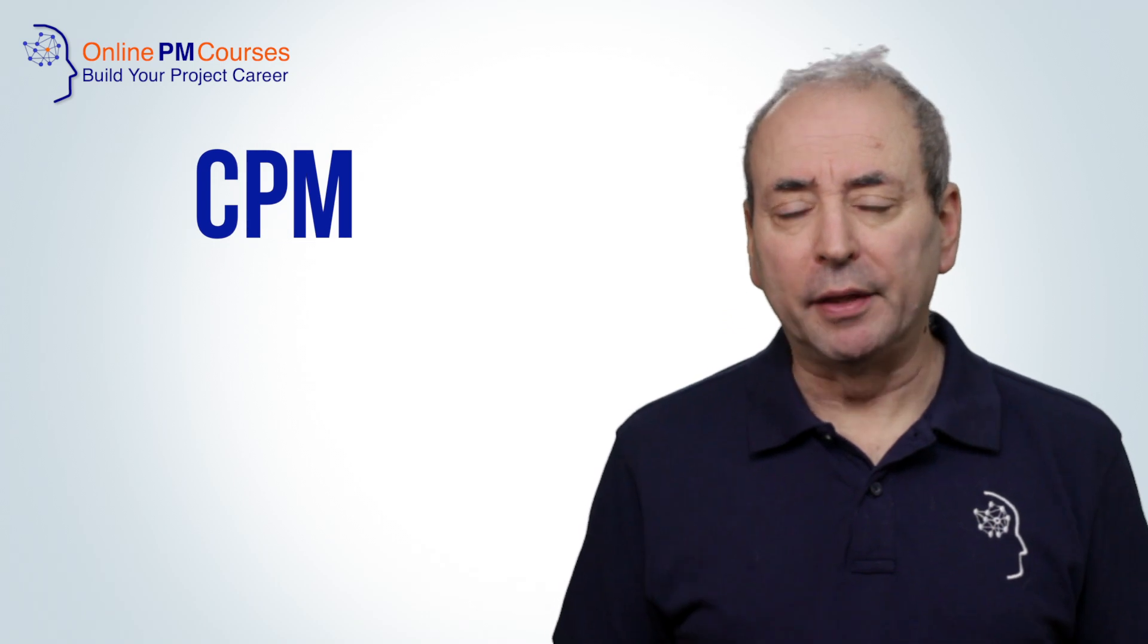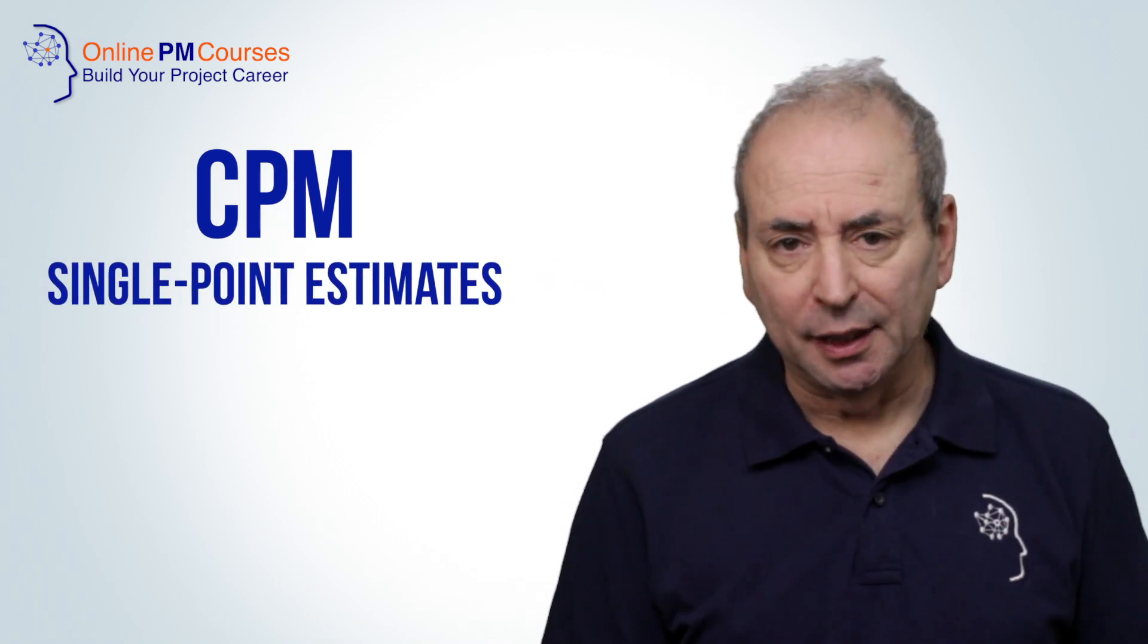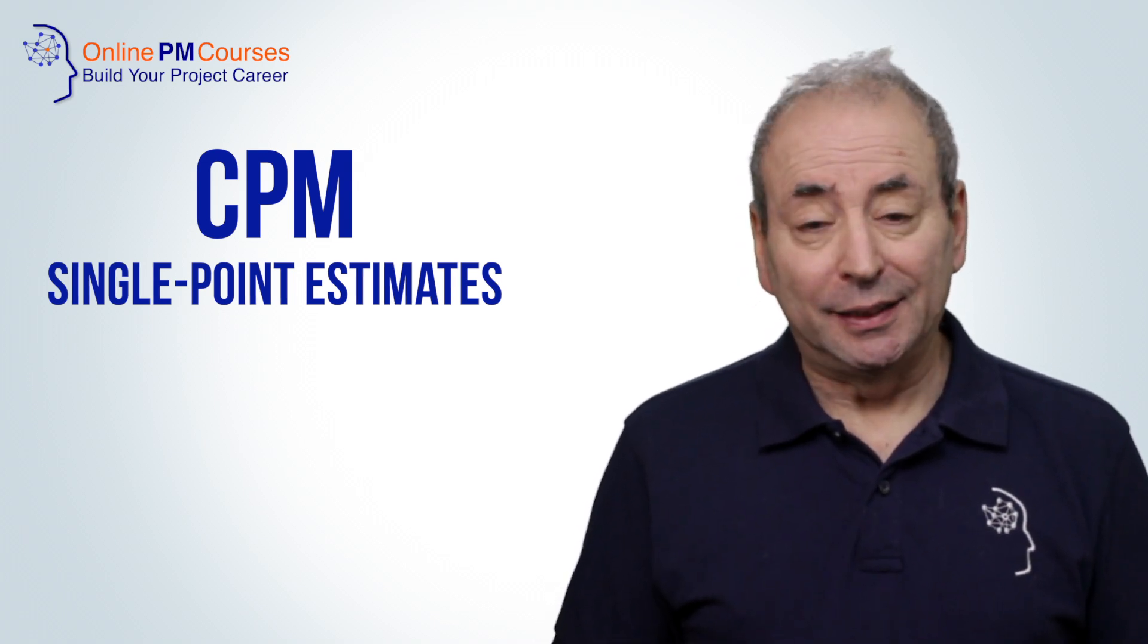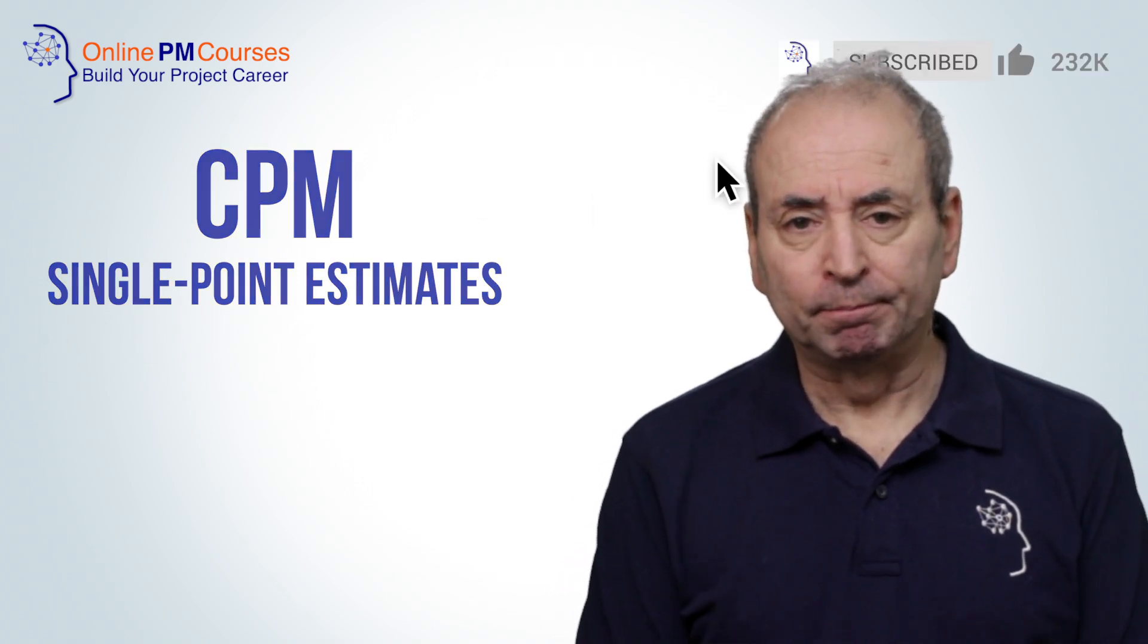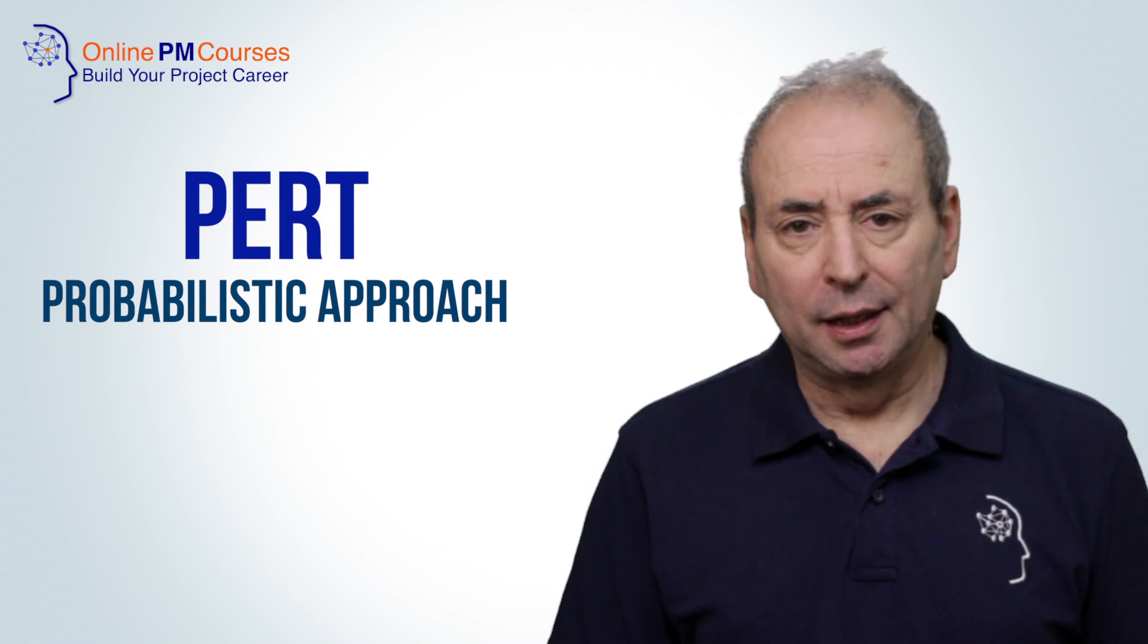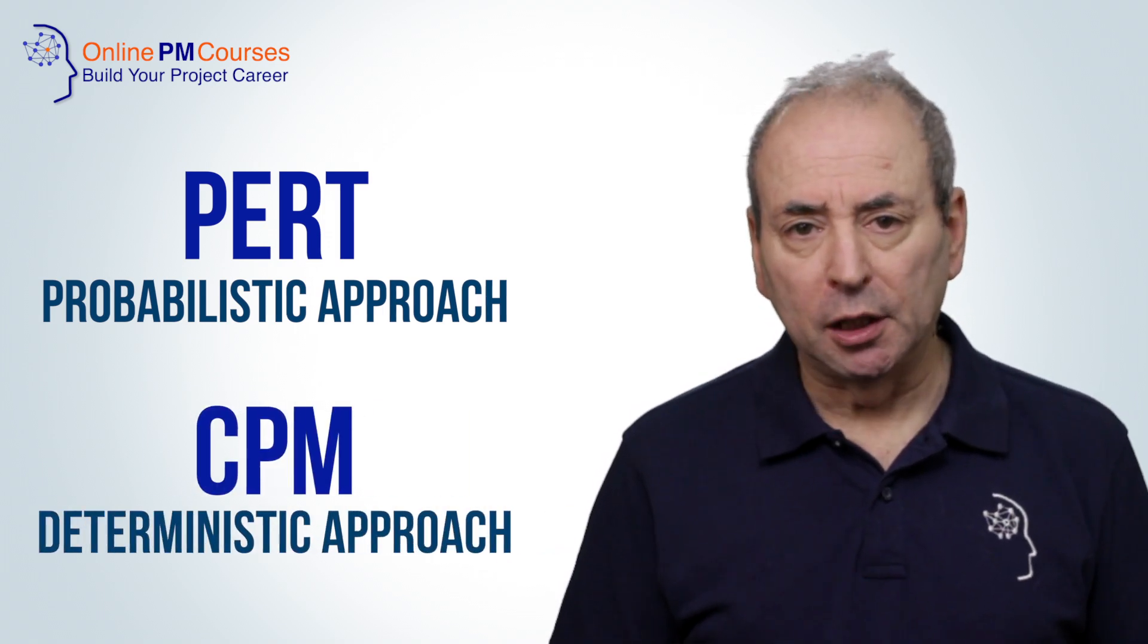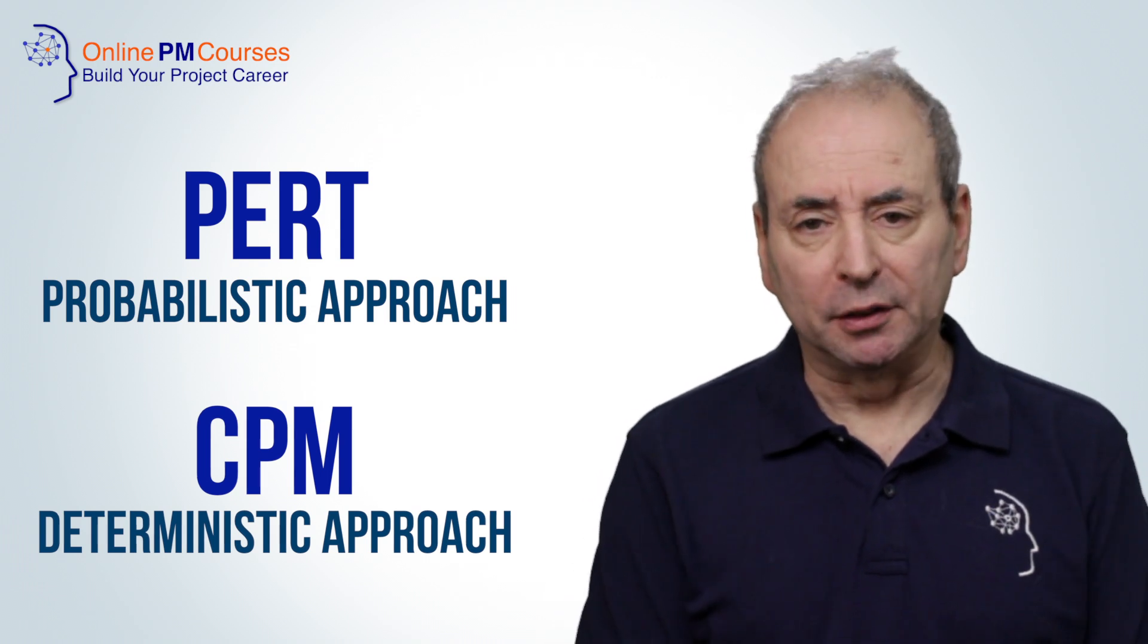The critical path method uses single point estimates for the duration of activities, and therefore it is far more appropriate where the activities are better defined and better understood. So we say that the PERT method is a probabilistic approach appropriate where there is high uncertainty, and the CPM is a deterministic approach appropriate where there is lower uncertainty and more confidence about durations.